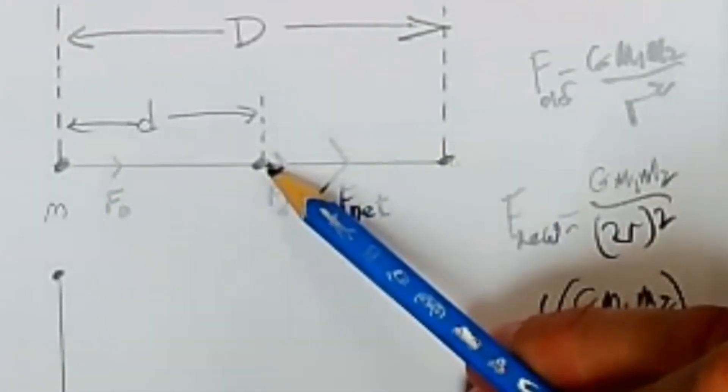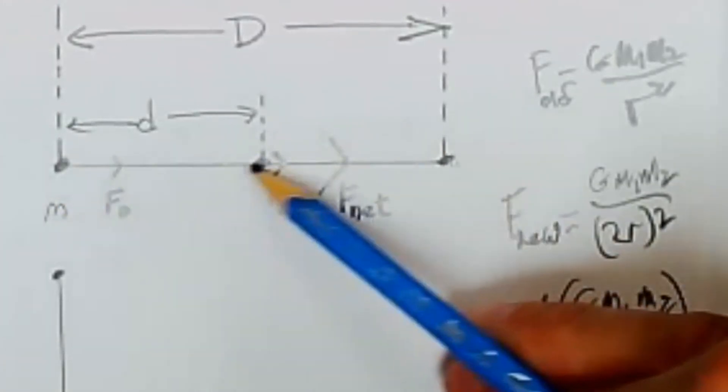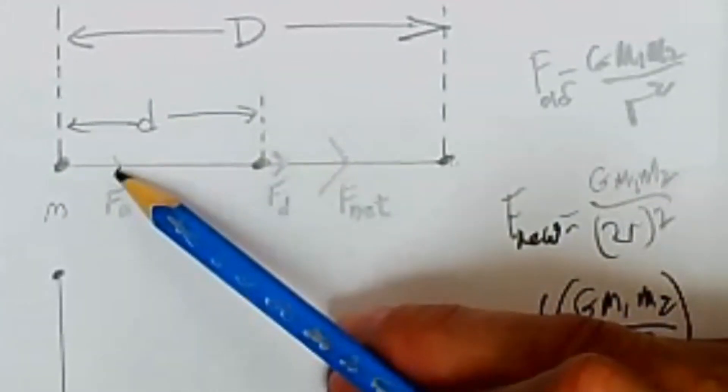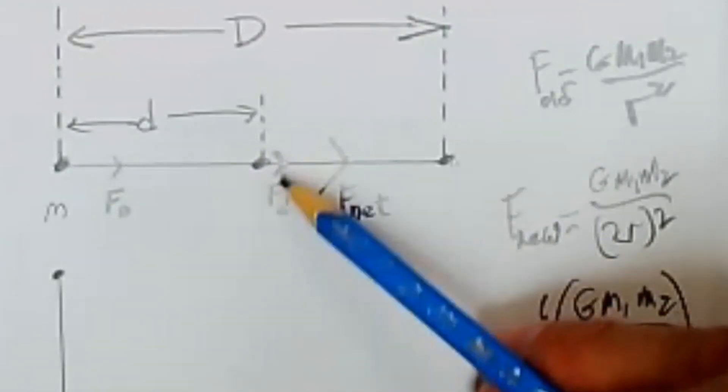And if we call this particle little d, the force on this one is greater. You can see all the way to here is the magnitude of that force from this particle. And this vector is 1 fourth as long as this one.